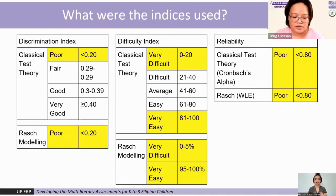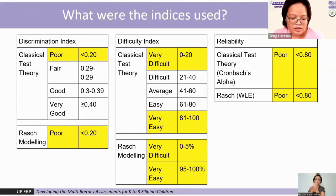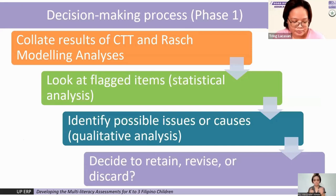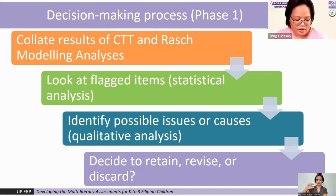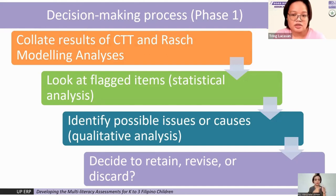To analyze items, we looked at discrimination and difficulty indices. The ranges indicated give a description of the test and of particular items, from poor to very good discrimination, or from very difficult to very easy. We also looked at indices to determine test reliability, with cells highlighted yellow showing which values were flagged. After collating the results of CTT and Rasch analysis, items were flagged based on statistical indices: discrimination, difficulty, and reliability. Flagged items were further analyzed qualitatively. Based on expert judgment, possible underlying issues for poor performance were identified, until finally a decision was made to either retain an item, revise it, or place it in an item bank.